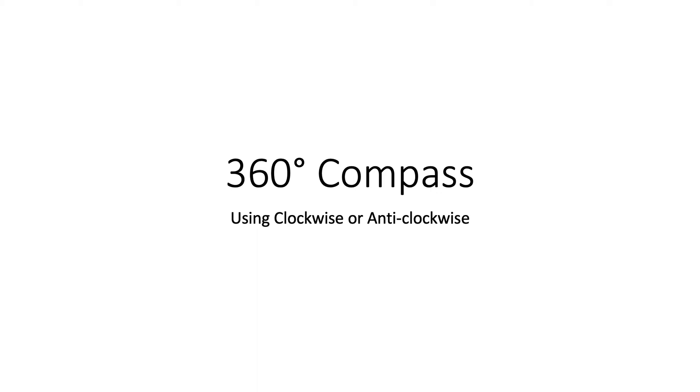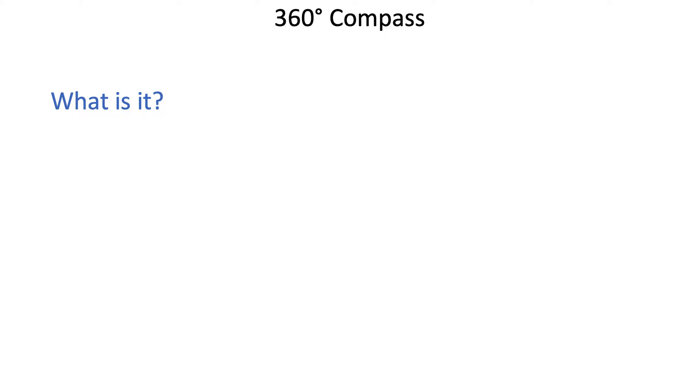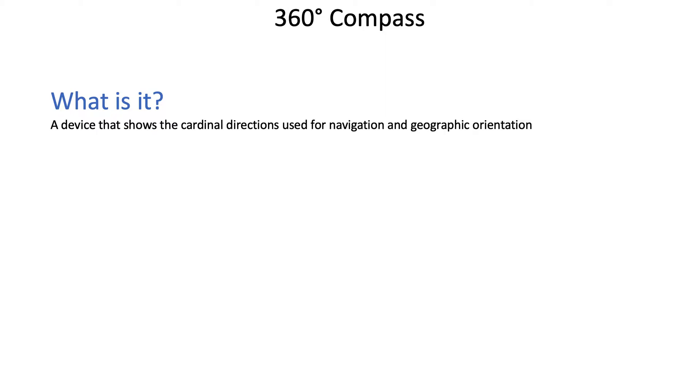A 360-degree compass — clockwise or anti-clockwise. What is it? It is a device that shows the cardinal directions, used for navigation and geographic orientation. It helps in finding your way while hiking or when you get lost.